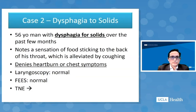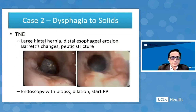Case 2 is a 56-year-old man with dysphagia for solids over the past few months. He noted food sticking to the back of his throat, alleviated by coughing, and denied heartburn or chest symptoms. He had a normal laryngoscopy and normal swallow test. TNE revealed a large hiatal hernia, distal esophageal erosion, Barrett's changes, and peptic stricture. This patient was referred for endoscopy with biopsy, dilation, and starting on proton pump inhibitors.